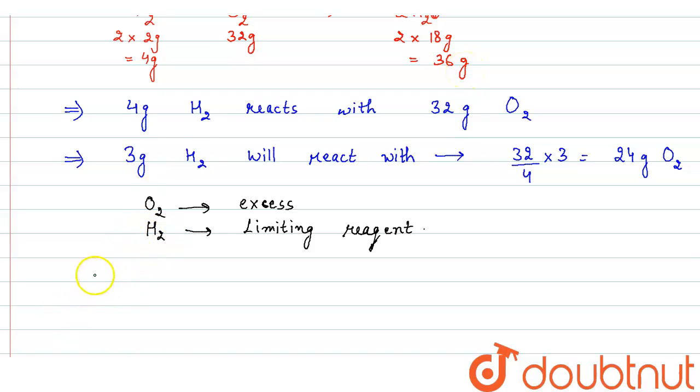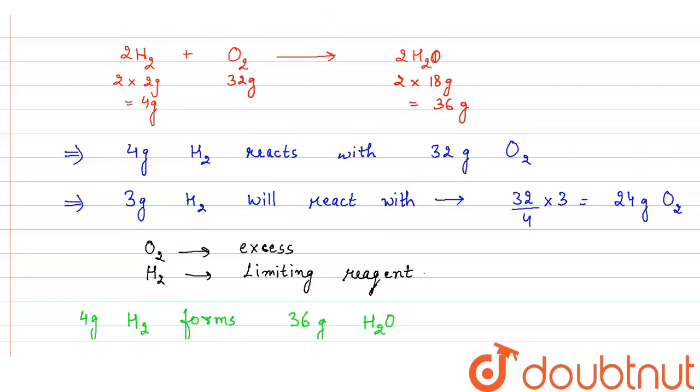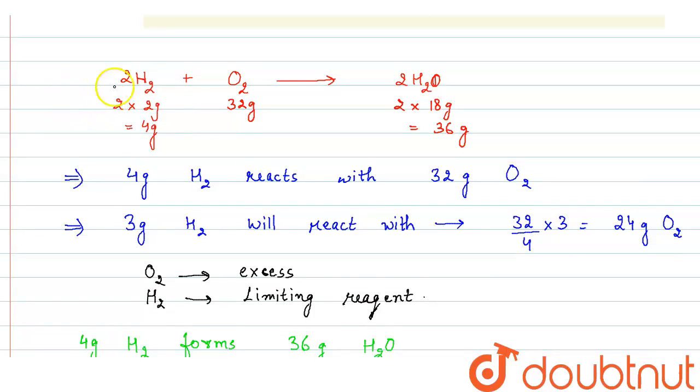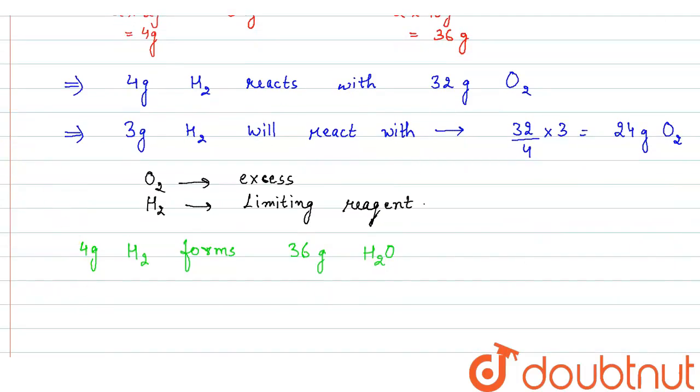So we know that 4 gram H2 forms 36 gram water. Right. This we can see from the given equation: 4 gram H2 gives 36 gram H2O. So from here we can find out...